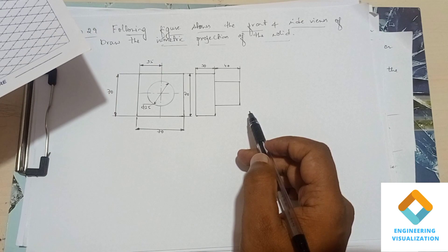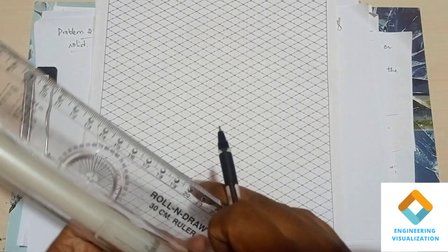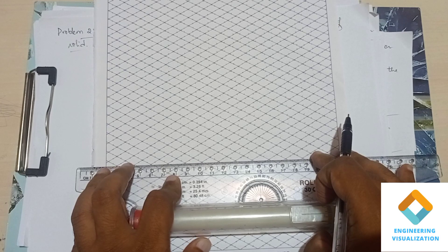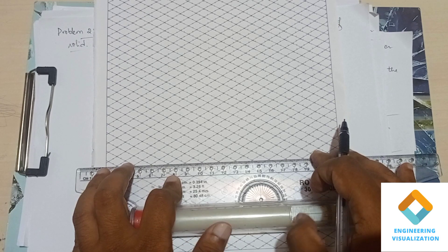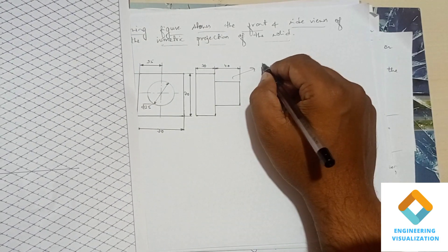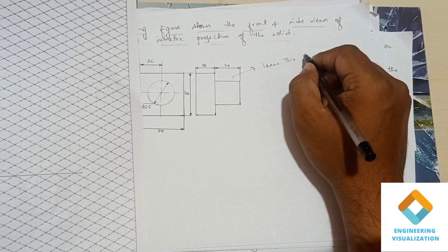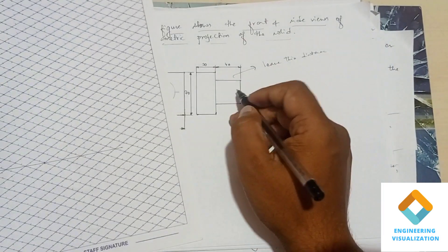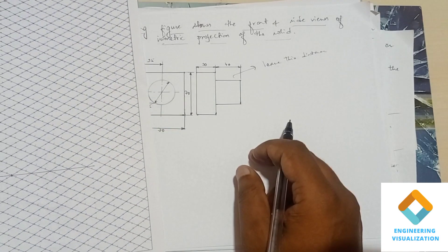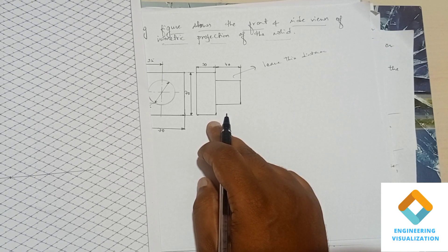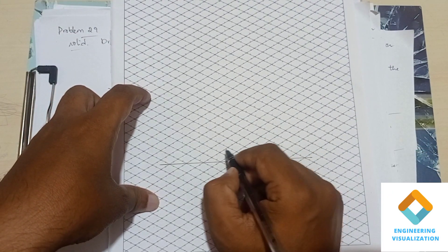First, I'll be constructing the rectangular block, from which there is a cylinder extruded centrally. I'll start by drawing one reference line and taking a reference point. From that reference point, we have to leave a distance of 40mm — that is four boxes — and then construct the square block with a thickness of 30mm.